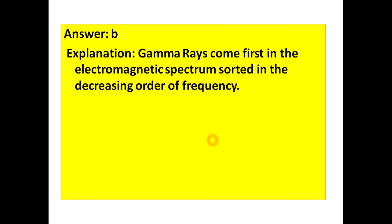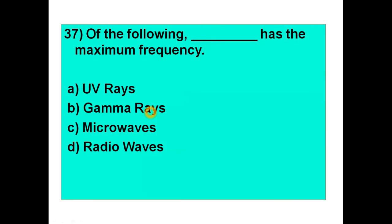Answer to this question is, of course, B, that is gamma rays. Gamma rays come first in the electromagnetic spectrum sorted in the decreasing order of frequency. So it has the maximum frequency.